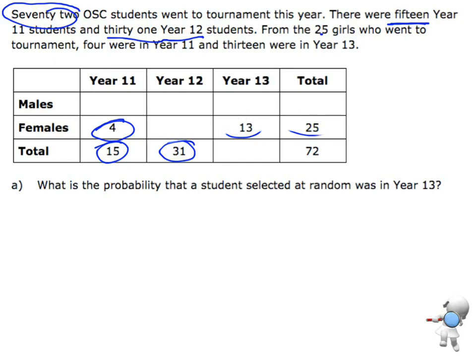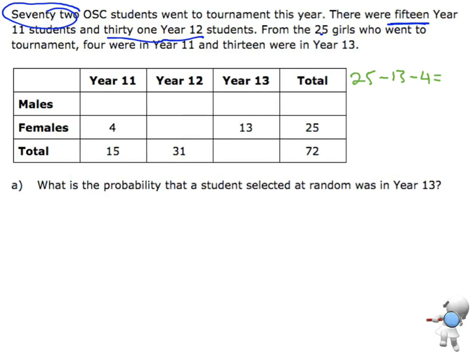Before I even look at the questions, I need to finish this table. Every row and every column has to add up. So in the female row, 4 plus something plus 13 has to equal 25. Using a calculator: 25 minus 13 minus 4 gives the Year 12 female number, which is 8.